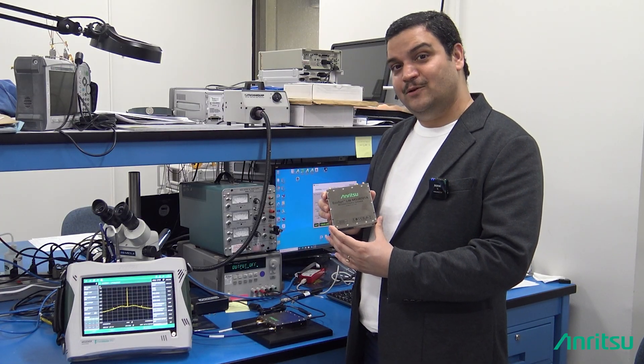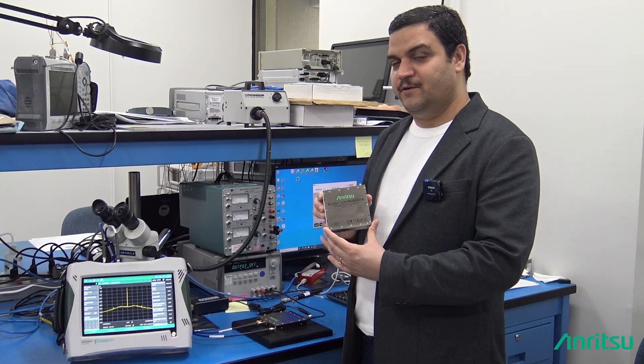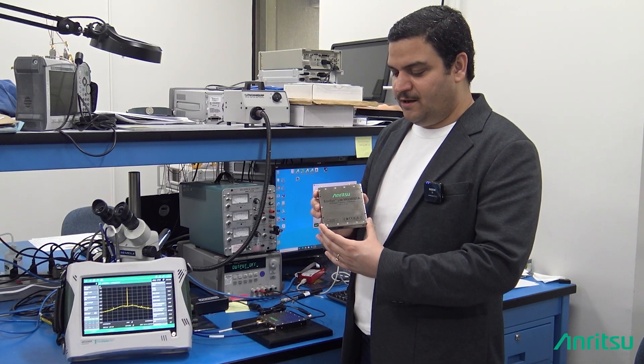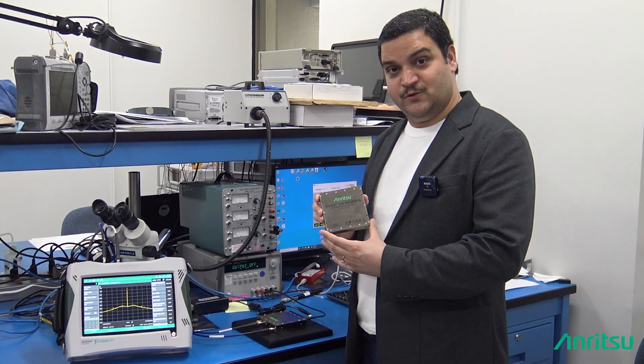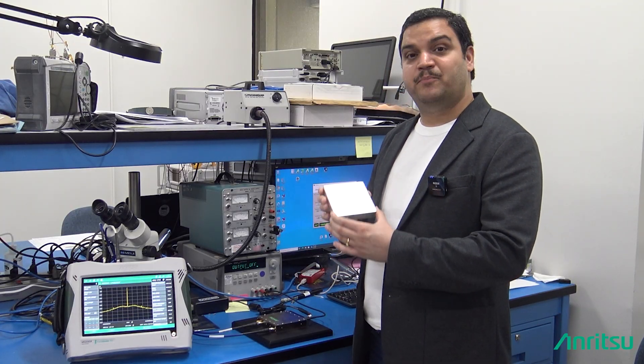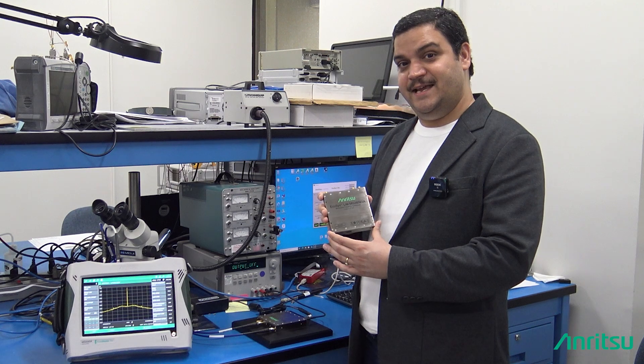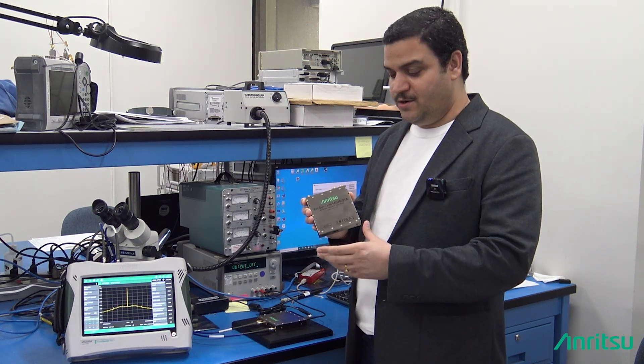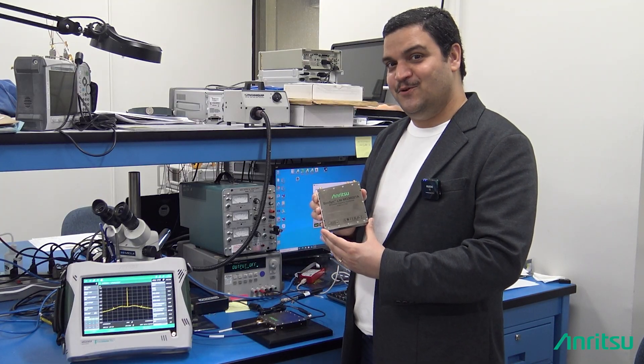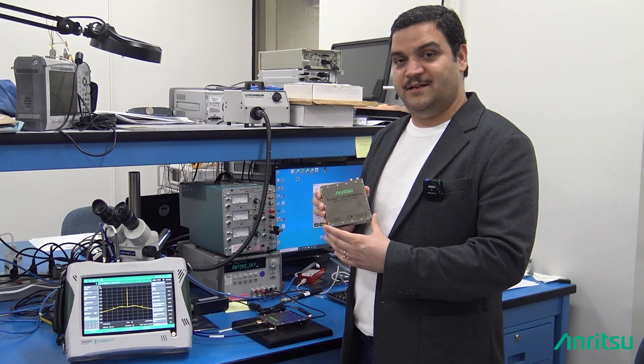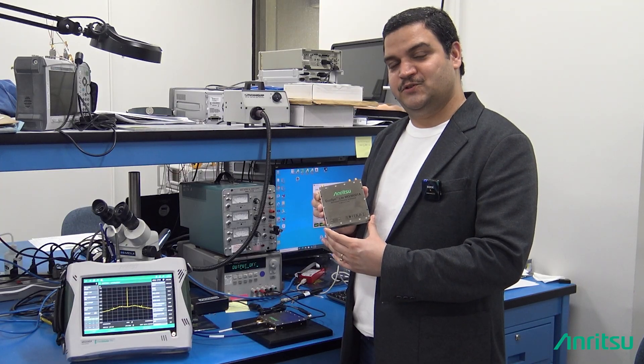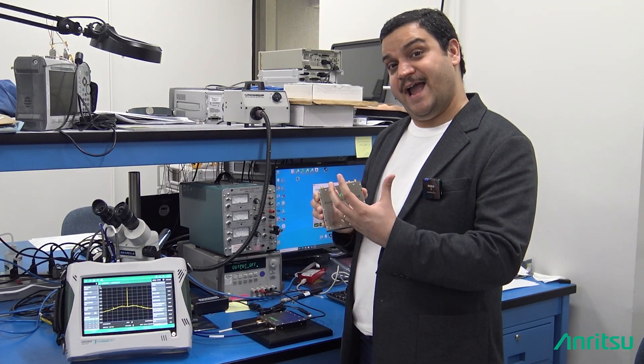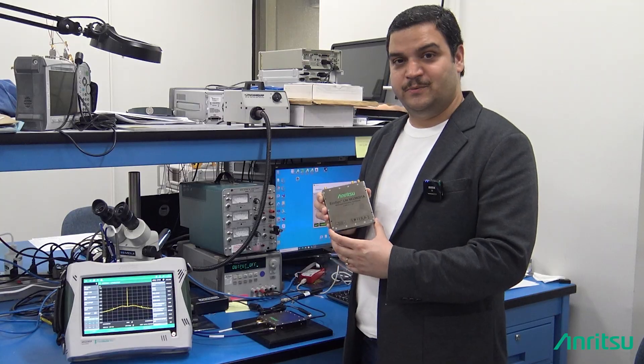If ATE customers want an LO source, a clean source, they can put it into their own ATE racks which have cooling. If the cooling is there, good. If not, and you would like to use this as a standalone module, there are optional accessories available from Anritsu which add a heatsink and on top of that a fan to it, so that it cools down.